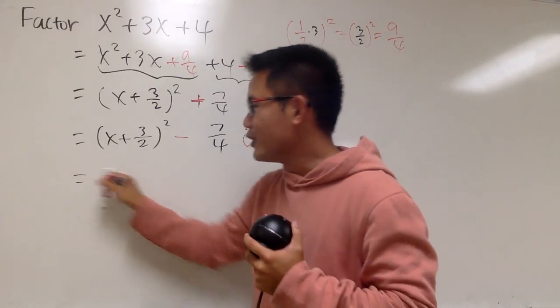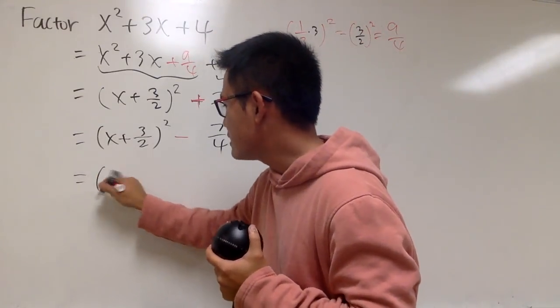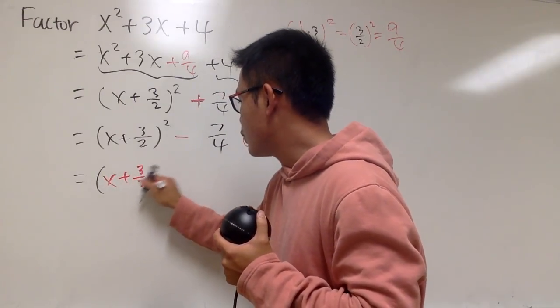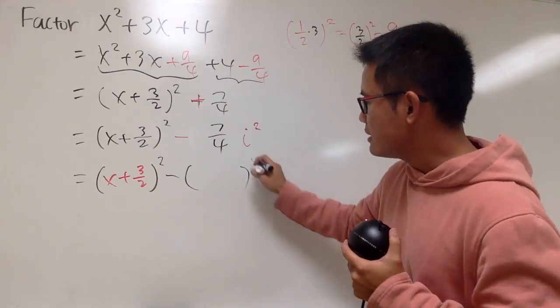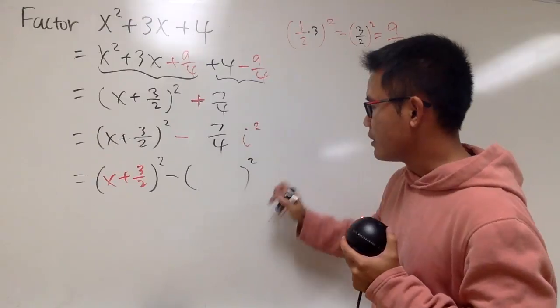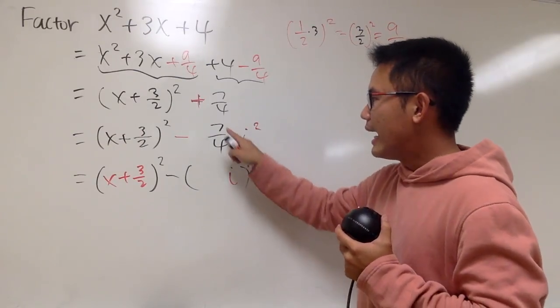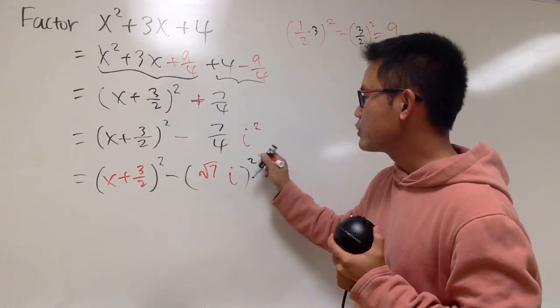And this is going to be a difference of two squares, let me show you. I will put this down as x plus 3 over 2 inside to be red, and then minus, I will open another parenthesis. I want this to be a square, how can I fill in this parenthesis? I want to have i squared right here, so that means I need to have an i inside. I need to have a 7 here, so what do I need? I need to have a square of 7, right? Square root of 7 squared, we get 7.